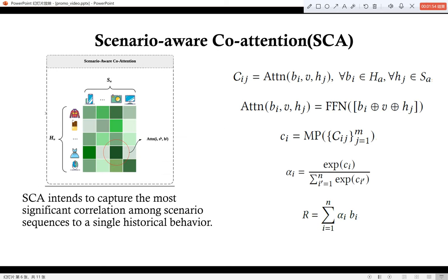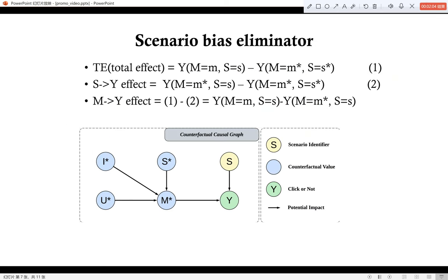Here is the scenario attention mechanism. It intends to capture the most significant correlation among scenario sequences to a single historical behavior. And here is the scenario bias eliminator mechanism. We use counterfactual debiasing method to eliminate the direct impact of scenarios on click behaviors.